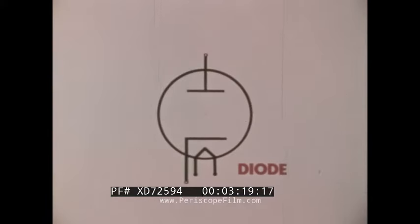When the cathode of a diode is hot and the potential or voltage of the plate is positive with respect to the cathode, electrons flow. If the plate is negative in comparison to the cathode, the electrons are repelled by the plate. In this way, the diode tube acts as a valve or one-way street for electrons.